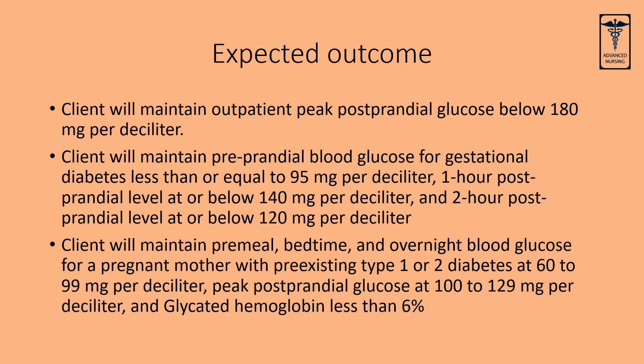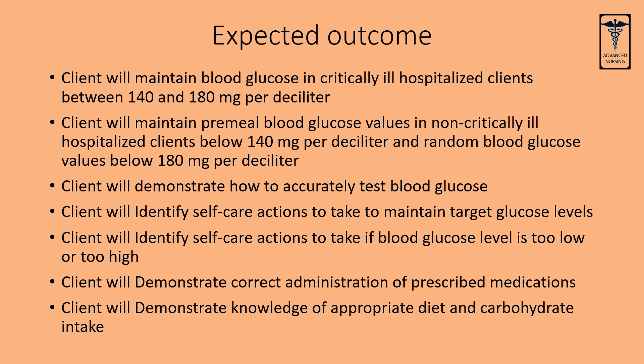Client will maintain, with pre-existing type 1 or 2 diabetes, at 60 to 99 mg per deciliter, peak postprandial glucose at 100 to 129 mg per deciliter, and glycated hemoglobin less than 6%. Client will maintain blood glucose in critically ill hospitalized clients between 140 and 180 mg per deciliter. Client will maintain pre-meal blood glucose in non-critically ill hospitalized clients below 140 mg per deciliter, and random blood glucose values below 180 mg per deciliter.